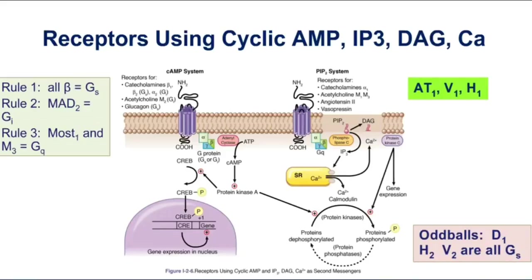So most sub-1s and M3s are GQ. Then there are a few oddballs — receptors that don't fit this pattern. Notice D1, histamine H2, and the vasopressin V2 receptor: those are actually all GS-coupled. So when you summarize GS, it's all betas, but then it's also D1, H2, and V2.